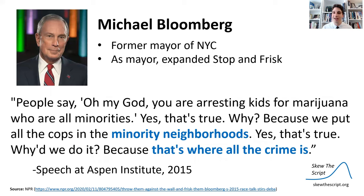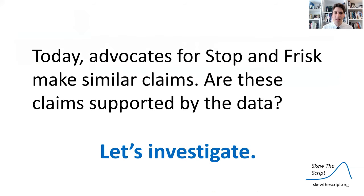People give various reasons for why this might be the case. Here's a quote from Michael Bloomberg, former mayor of New York City, who expanded Stop and Frisk. He said: 'People say, oh my God, you're arresting kids for marijuana who are all minorities. Yes, that's true. Why? Because we put all the cops in minority neighborhoods. Yes, that's also true. Why do we do it? Because that's where all the crime is.' Mayor Bloomberg is saying there's a reason we disproportionately stop people of color — it's because crime rates are higher in those neighborhoods. Advocates for Stop and Frisk today tend to make similar claims, so let's investigate whether these claims are supported by the data.